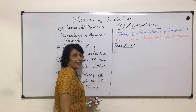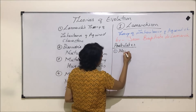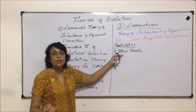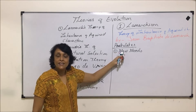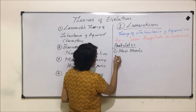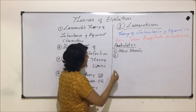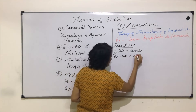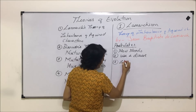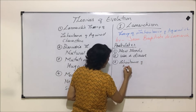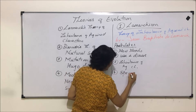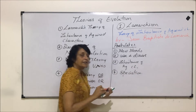The first postulate says 'new needs' — according to this, some new need or requirement arises due to which evolution takes place. The second postulate is 'use and disuse.' The third postulate is 'inheritance of acquired character.' And the fourth is 'speciation.' Now let us take these points one by one.